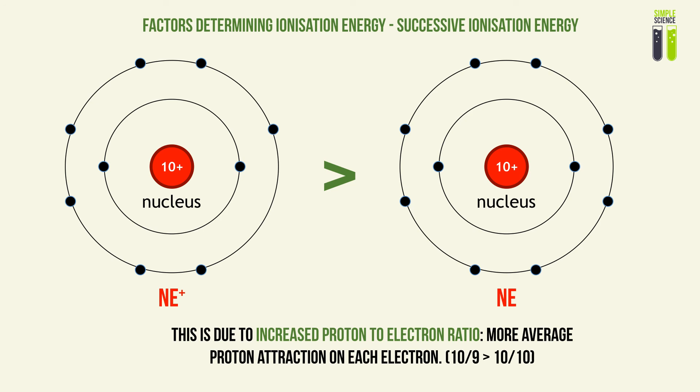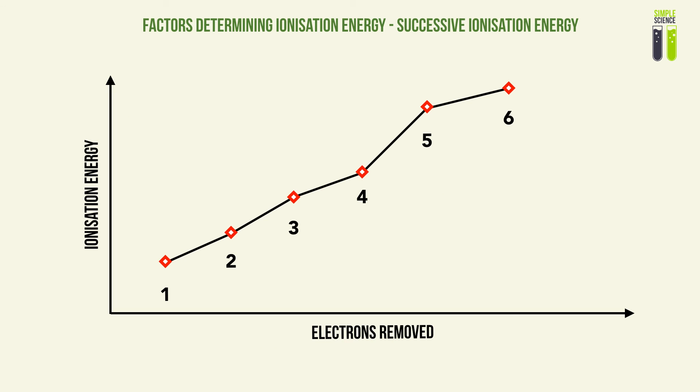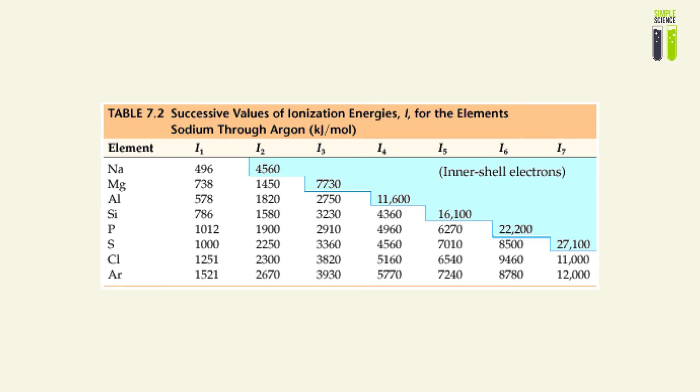This is due to the increase in proton-to-electron ratio. Attraction can be measured based on the ratio of protons to electrons — for example, 10 protons to 9 electrons gives a greater average attraction per electron than 10 protons to 10 electrons. Looking at a chart for a particular element, as you increase the number of electrons removed, the ionization energy for removing each successive electron trends generally upward. The actual values confirm that from the first to the second to the third ionization energy, there is a consistent increase as more electrons are removed.